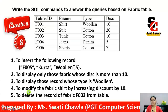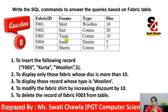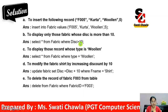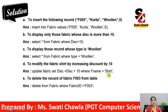Next part: to modify the fabric 'shirt' by increasing discount by 10. The word 'modify' means the UPDATE command will be used. The syntax is: UPDATE fabric SET disc = disc + 10 WHERE f_name = 'shirt'. The disc column represents discount, and we need to increase it by 10. The WHERE clause identifies the record using f_name equals 'shirt'.